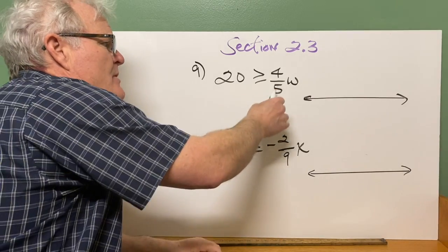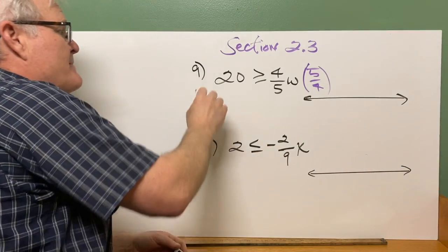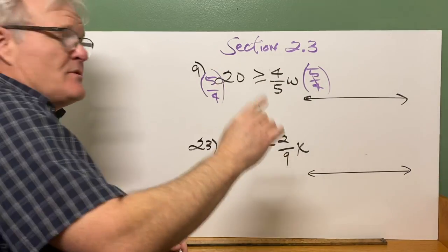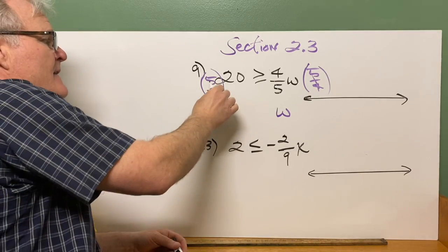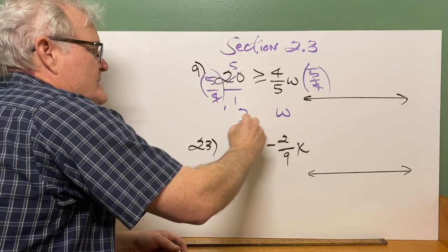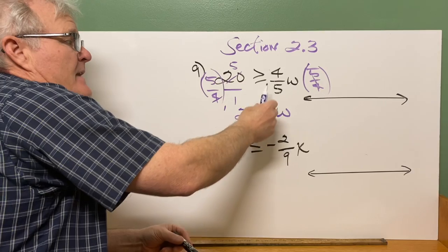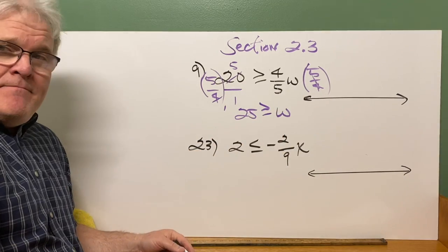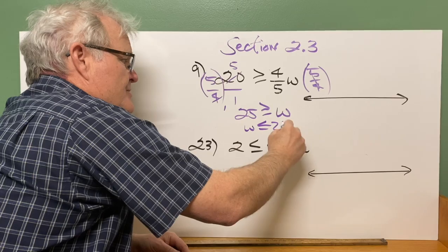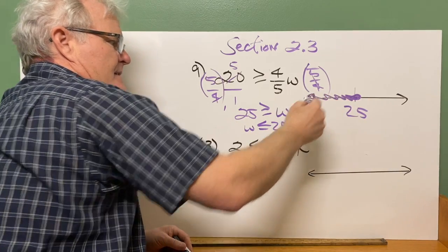For the next problem with a fraction times a variable, like 4/5 W is less than or equal to 20 — to undo that, you multiply through by the reciprocal, which is 5/4. So multiply each side by 5/4. On the left, 4/5 times 5/4 equals 1, leaving 1W. On the right, 5/4 times 20 — you can cancel the 4 and 20 — which gives you 25. Since I multiplied through by a positive value, the sign stays the same. Remember, I want the variable on the left, so this is W is less than or equal to 25. When you graph that, go to 25, solid circle, shaded to the left.